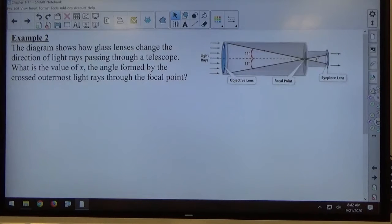The diagram shows how glass lenses change the direction of light rays passing through a telescope. What is the value of x, the angle formed by the crossed outermost light rays through the focal point?